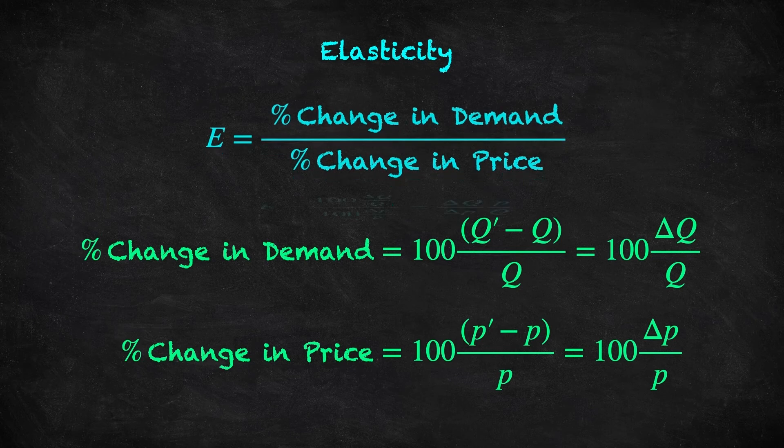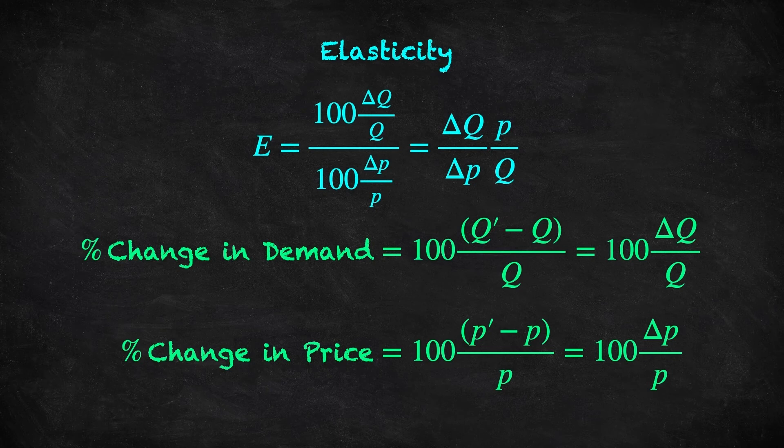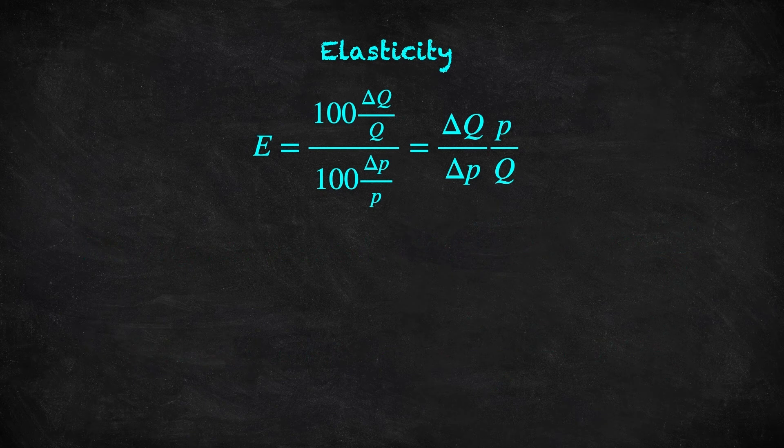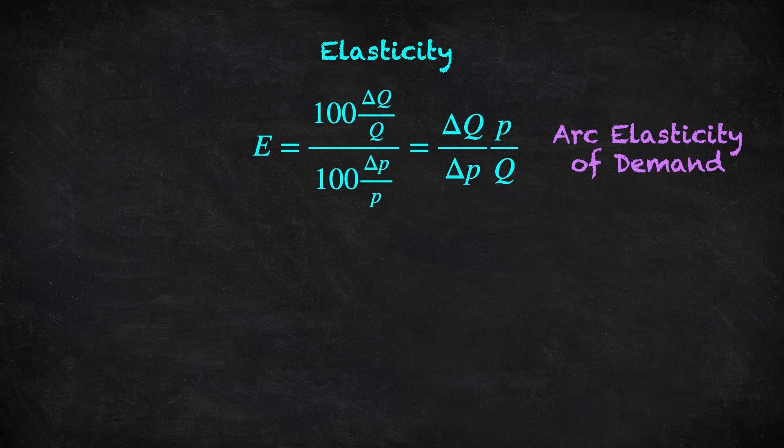Let's replace these expressions in our elasticity formula, and with some cancelling of common terms and cleaning up a bit, we get elasticity equals change in Q over change in P, multiplied by P over Q. With this formula, we can deal with changes of any size, and to be specific, this is known as arc elasticity of demand.